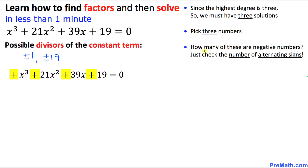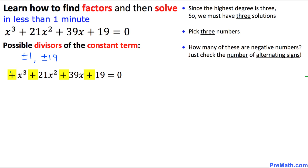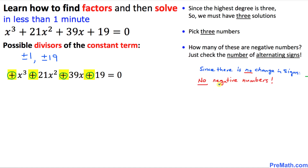Now, how many of those three numbers are going to be negative? To find out, let's focus on the highlighted signs. All these signs are positive, so there's no change, no fluctuation. That means none of these numbers are going to be negative — the reason being there's no change in signs. So all three numbers are going to be positive.